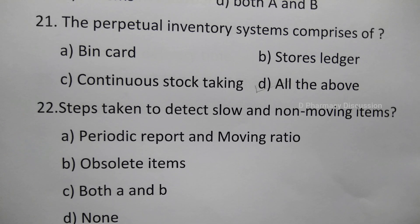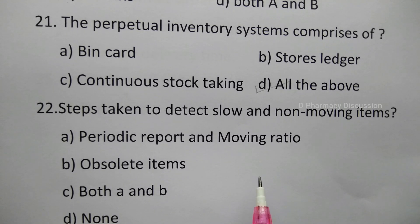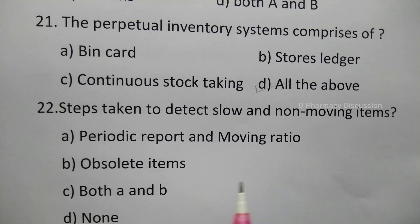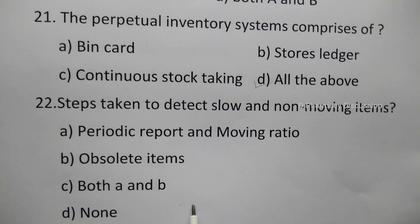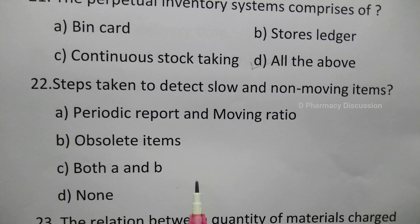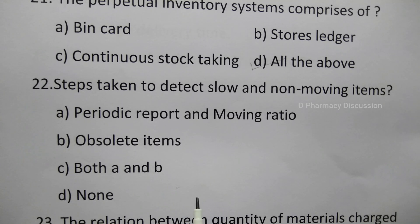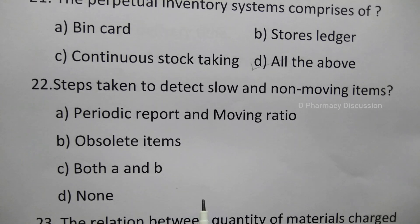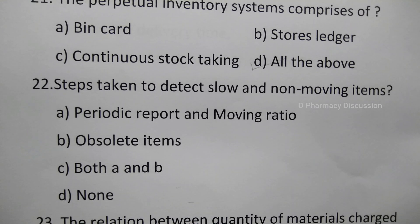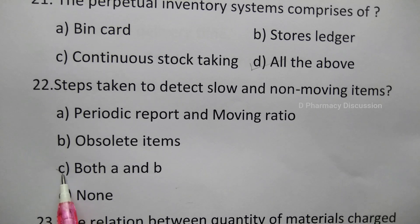Question 22: Steps taken to detect slow and non-moving items — option A: periodic report and moving ratio, B: obsolete items, C: both A and B, D: none. The correct answer is option C, both A and B.